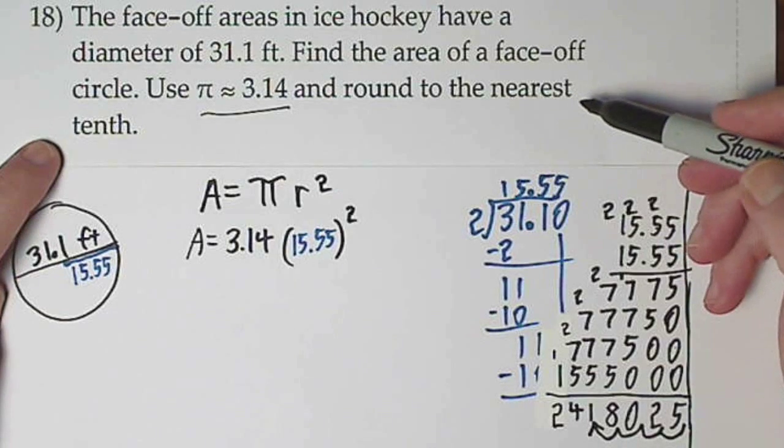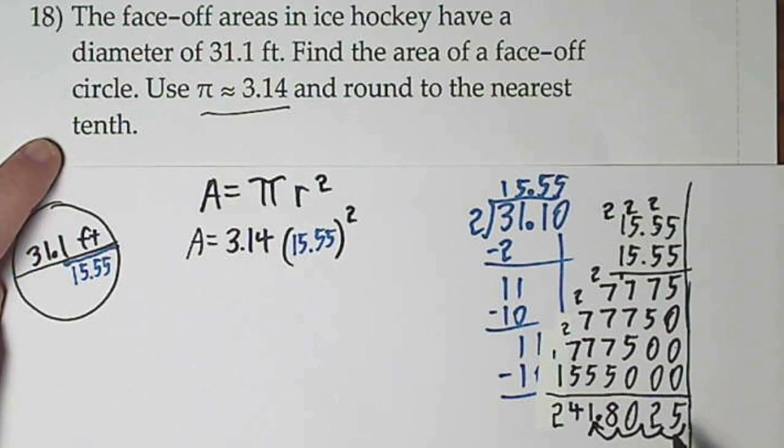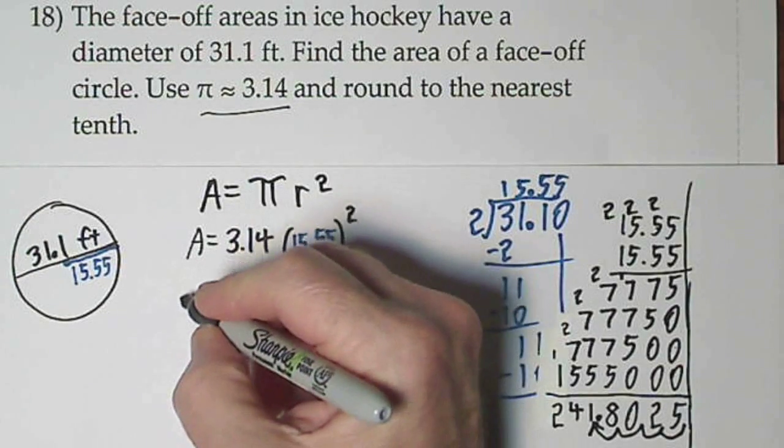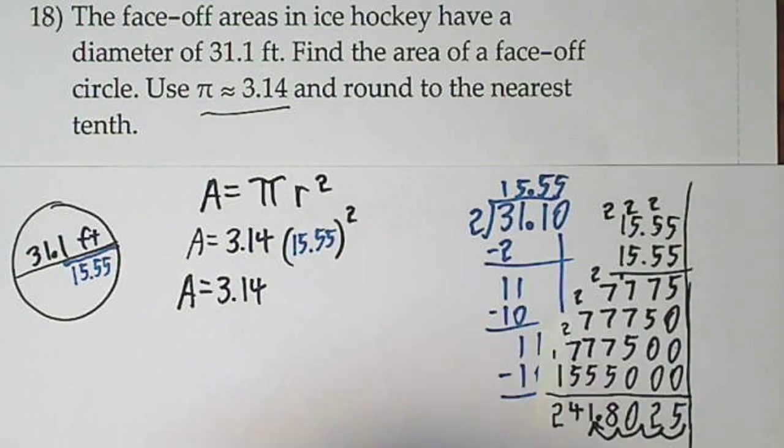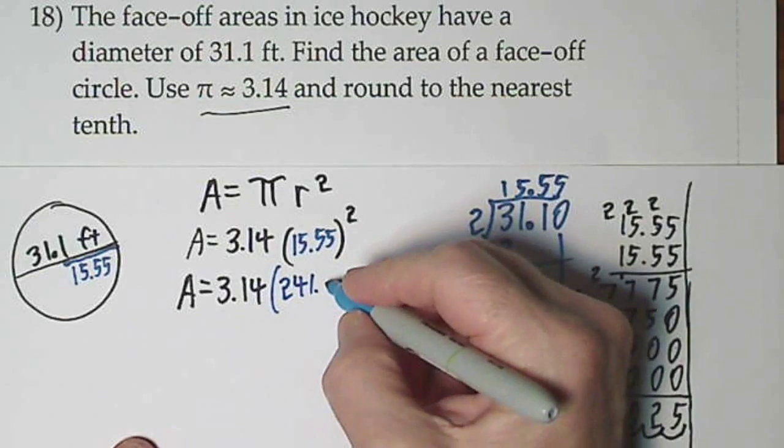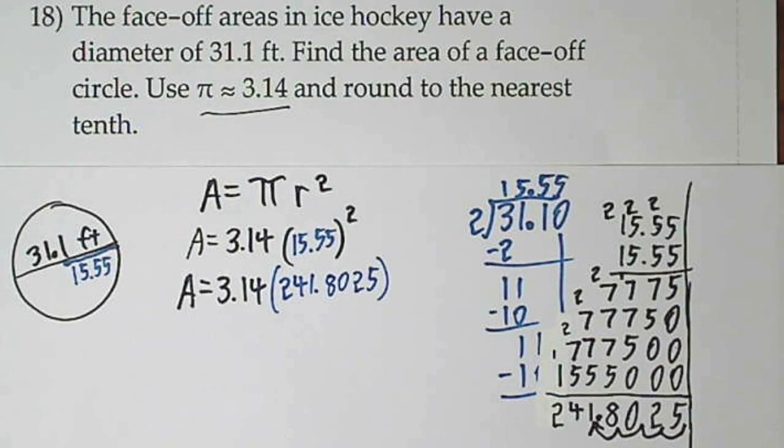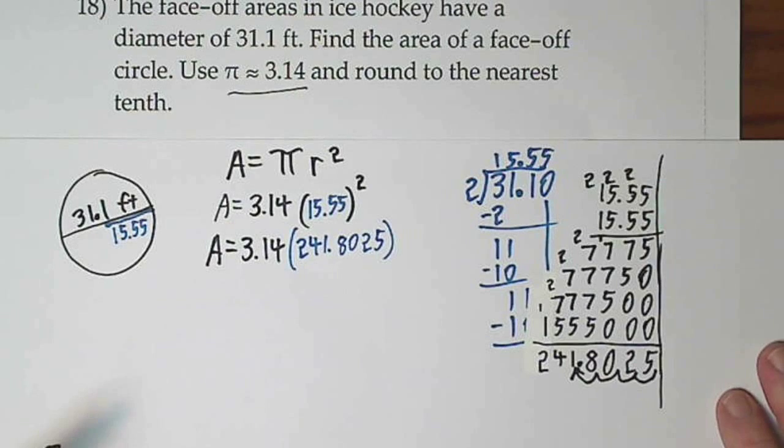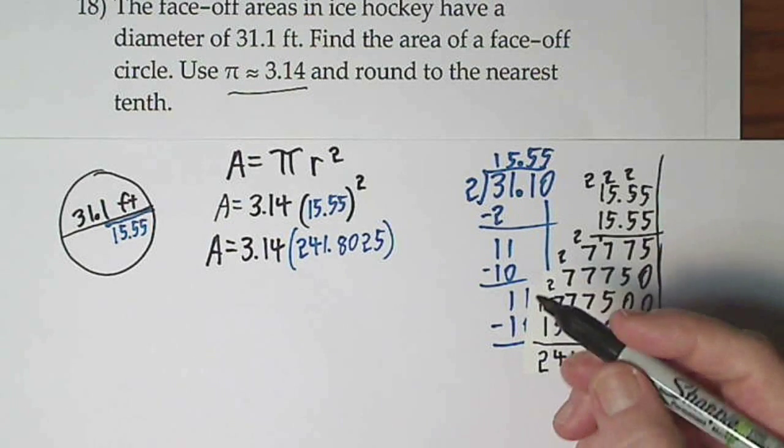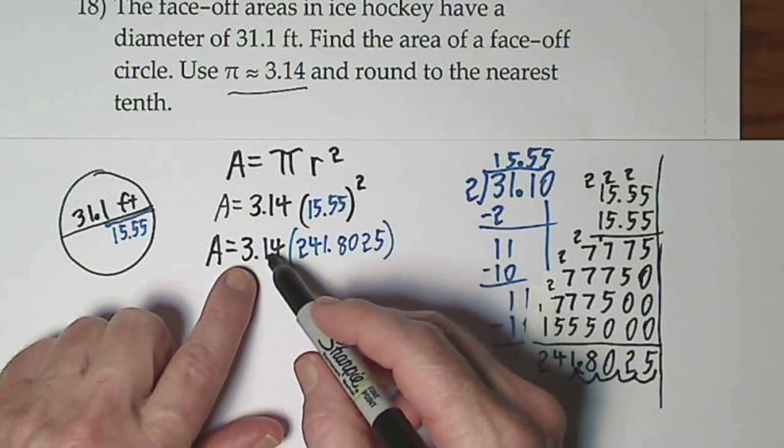They said round to the nearest tenth, but you really shouldn't do that until the end. If we round in the middle of our calculation it will throw us off by too much. So I want to be sure the decimal is sitting right here. It's 241 and then all that. So we have A = 3.14 times all of this.